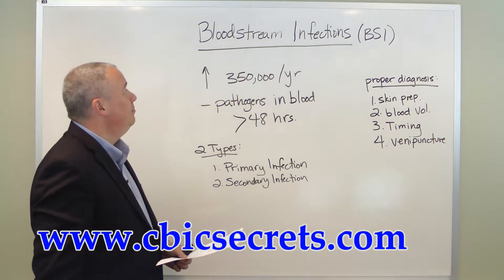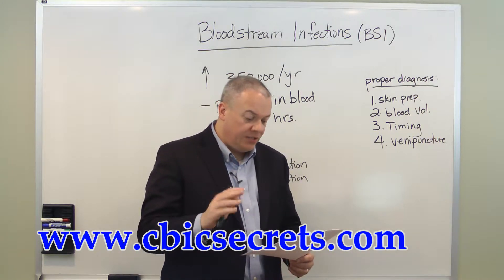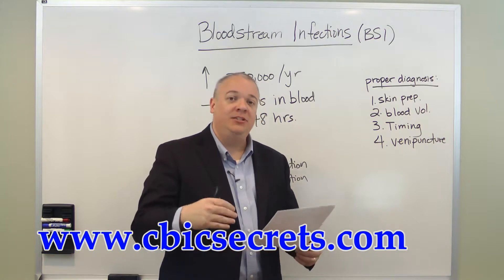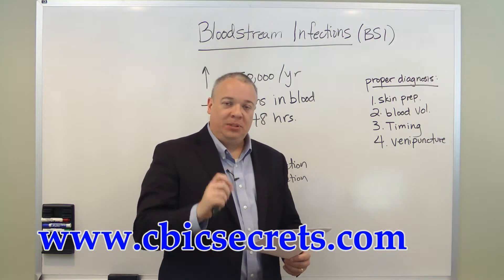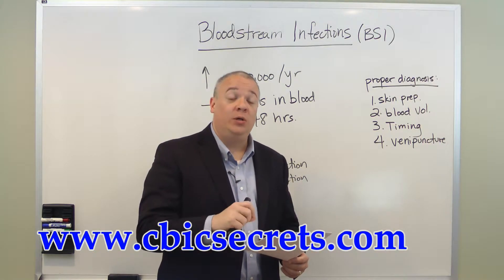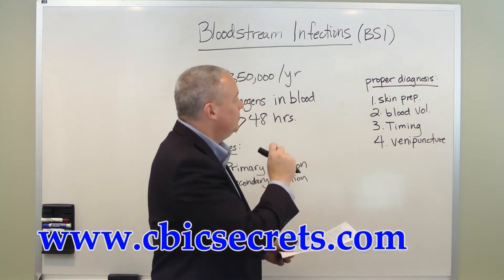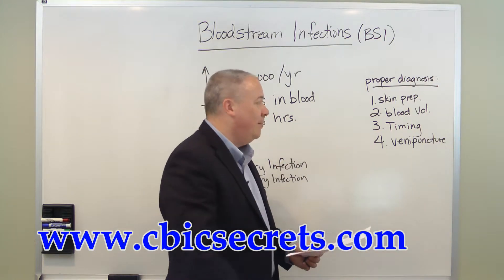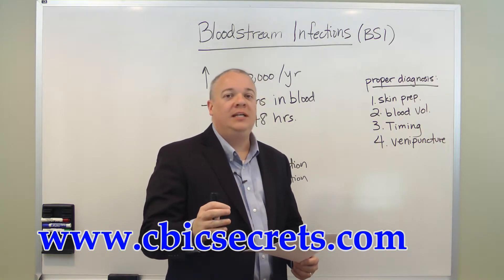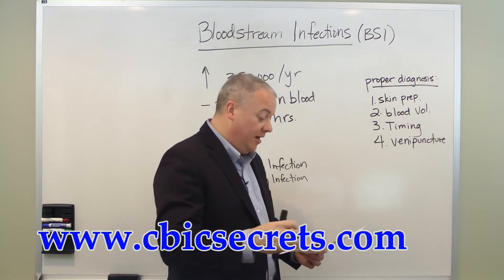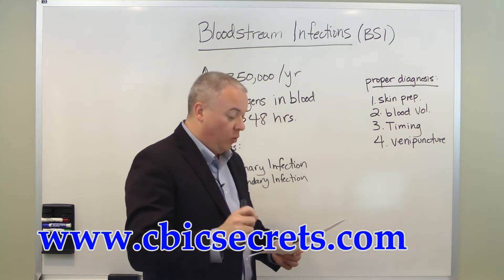When diagnosing a bloodstream infection, four things need to be kept in mind. First, skin preparation — it is extremely important to take adequate measures to prevent contamination of the sample. Prepare the skin properly before taking blood to avoid a false positive. Second, blood volume — make sure you have a sufficient quantity, ideally between 10 and 20 milliliters, in order to detect low concentrations of organisms.